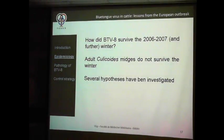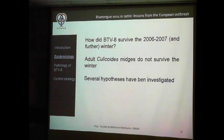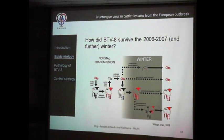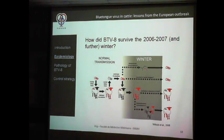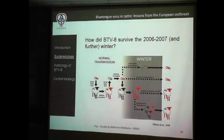We had a few cases at the end of 2006 and then a large outbreak of BTV in 2007, raising questions about how the virus survived winter in cold Europe. We know that Culicoides cannot survive winter, so there are several hypotheses. The main way for the virus to survive winter is transplacental transmission — especially in cattle with nine months of gestation — keeping the virus hidden until it emerges in spring, which was probably what happened.